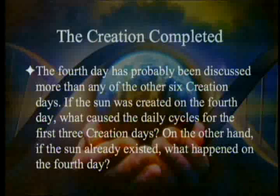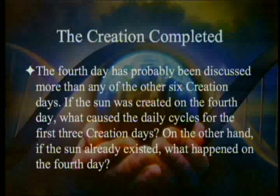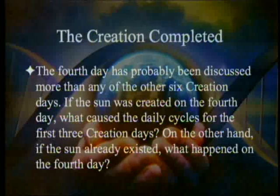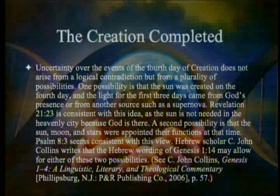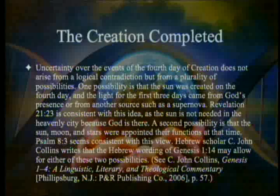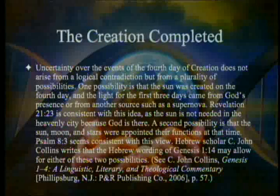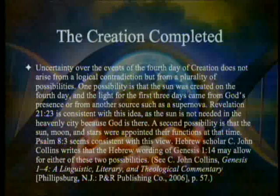The fourth day has probably been discussed more than any of the other six creation days — people like to quibble. If the sun was created on the fourth day, what caused the daily cycles for the first three creation days? On the other hand, if the sun already existed, what happened on the fourth day? Uncertainty over the events of the fourth day does not arise from a logical contradiction but from a plurality of possibilities. One possibility is that the sun was created on the fourth day, and the light for the first three days came from God's presence or another source such as a supernova. Revelation 21:23 is consistent with this idea.